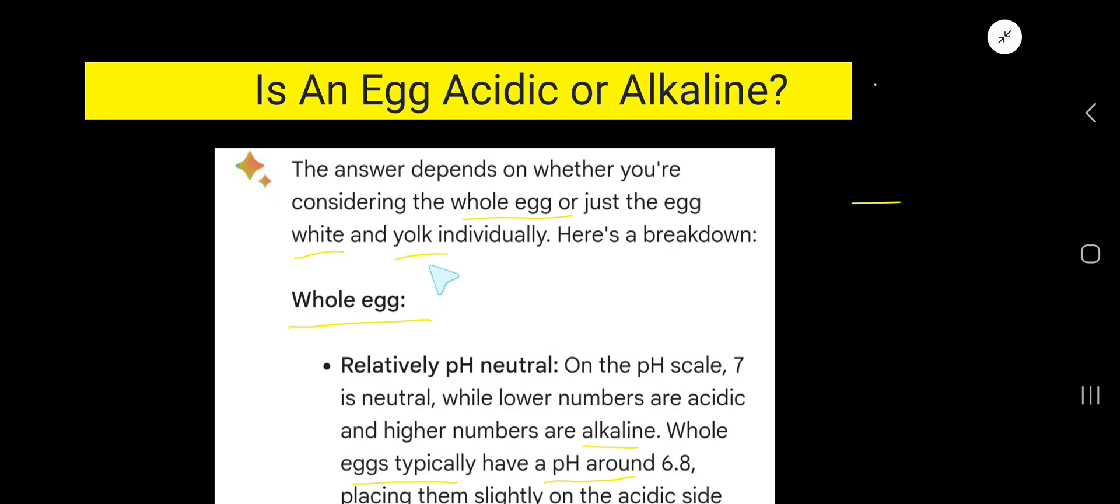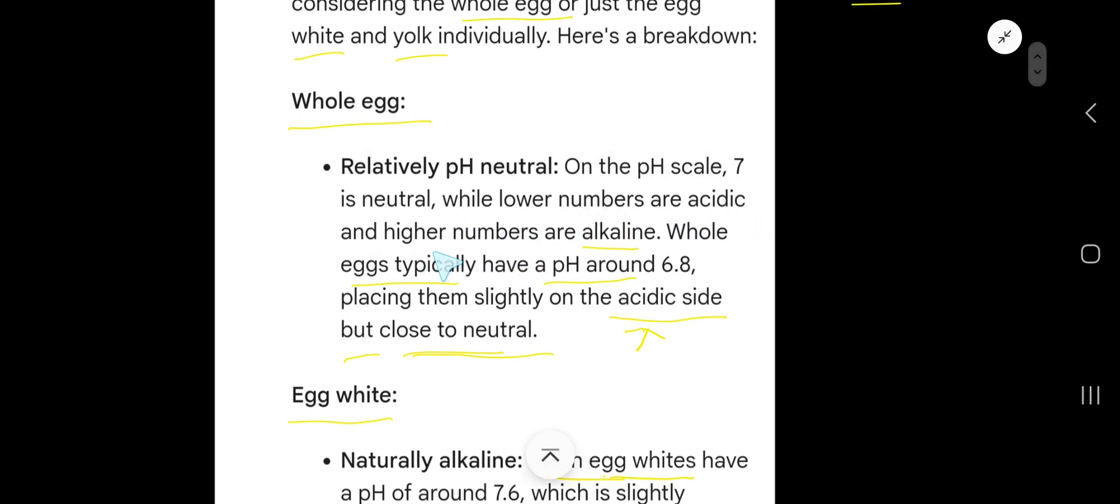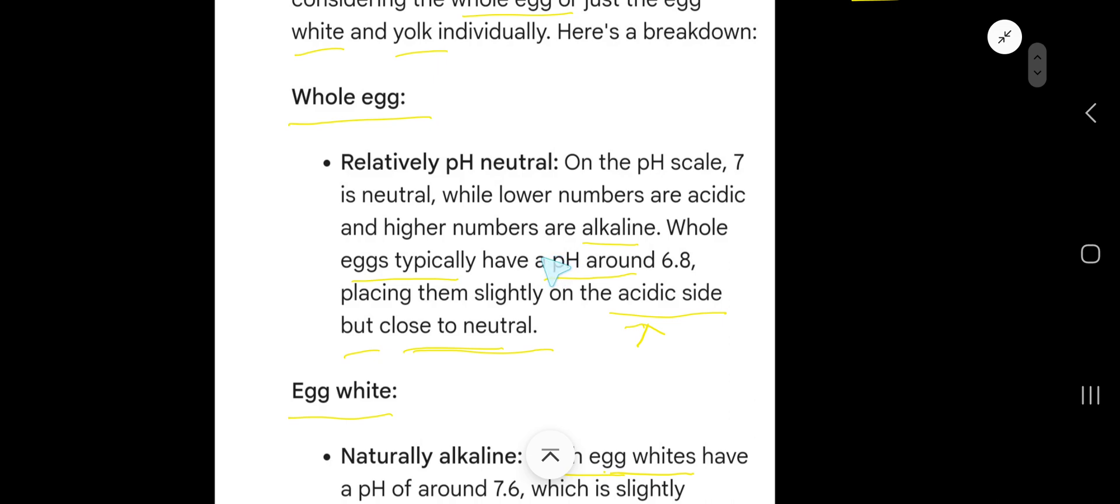just the white or yolk individually. Here is a breakdown. Whole egg: relatively pH neutral. On the pH scale, 7 is neutral, less than 7 is acidic, and higher than 7 is alkaline. Whole eggs typically have a...